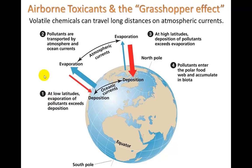This is called the Grasshopper Effect. In the Grasshopper Effect, volatile chemicals — meaning chemicals that can evaporate easily — can travel long distances on atmospheric currents, and by long distances we mean halfway around the world. In temperate areas where it's warmer, you get evaporation of these chemicals. They evaporate faster than they re-deposit. They re-deposit through precipitation — rain, snow, etc. Once in the atmosphere, they travel long distances and become deposited in the north, where it's colder, so you get more deposition and less evaporation, causing an accumulation. We call it the Grasshopper Effect because the toxins end up far from where they started.